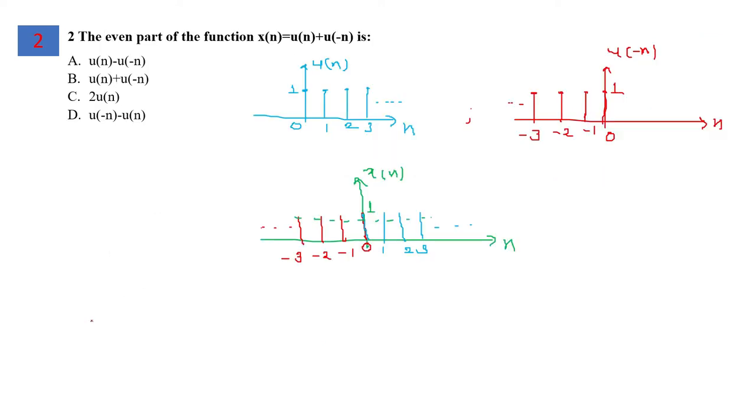Moving to question number 2, we need to find the even part of the given function x(n) equals u(n) plus u(-n). If we plot this signal, u(n) is a unit step sequence existing from 0 to infinity with amplitude 1, and u(-n) is obtained by taking the mirror image.